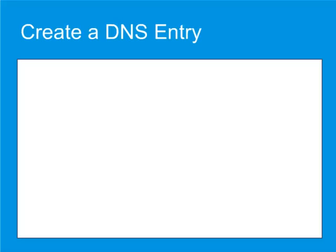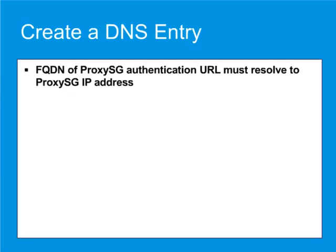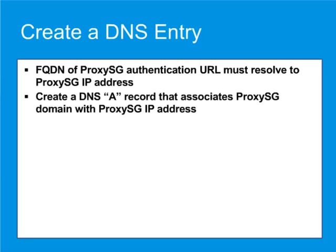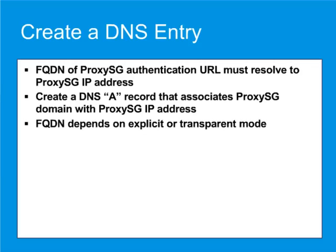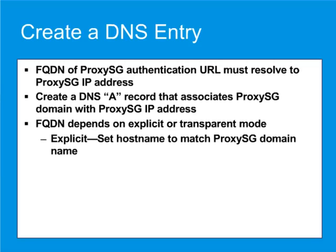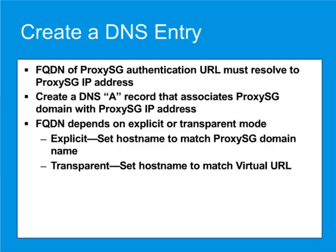For IWA authentication to be successful, your clients must be able to resolve the fully qualified domain name of the ProxySG authentication URL to the IP address of the ProxySG appliance. Create a DNS A record that associates the ProxySG authentication domain with the IP address of the ProxySG. The fully qualified domain name depends on whether you are using an explicit or transparent deployment. For explicit deployments, set the host name in the DNS A record to match the ProxySG domain name specified in the browser's explicit proxy configuration. For transparent deployments, set the host name to match the virtual URL in the IWA configuration.